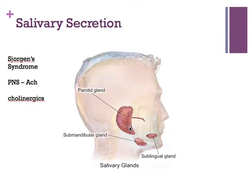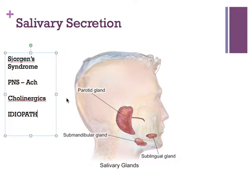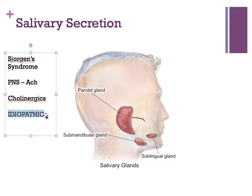Parotitis can also be caused by mumps, which causes parotid swelling. It is sometimes called idiopathic. Pathos means disease — like pathology, the study of disease — and idio- is like 'idiot,' meaning not knowing anything. So idiopathic means we don't know why that happened. When diseases are characterized that way, it means we just don't know the cause.